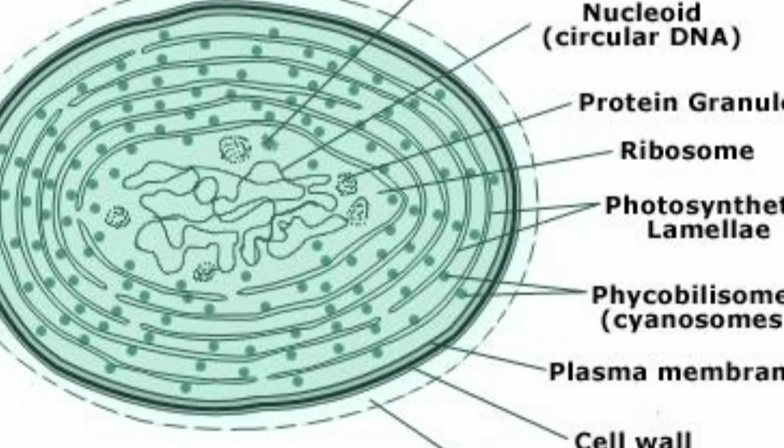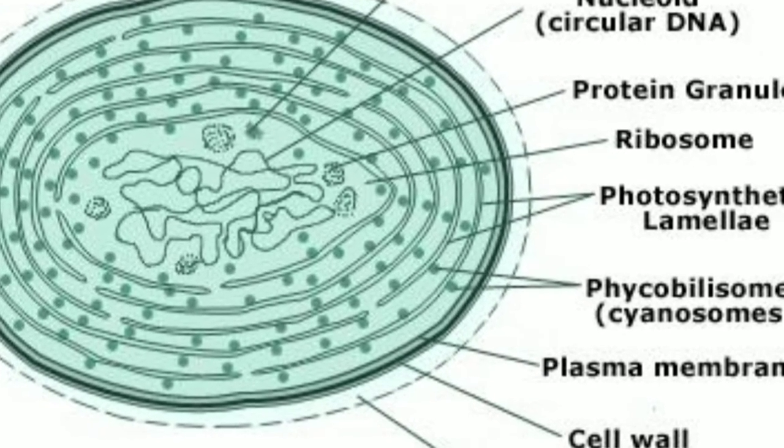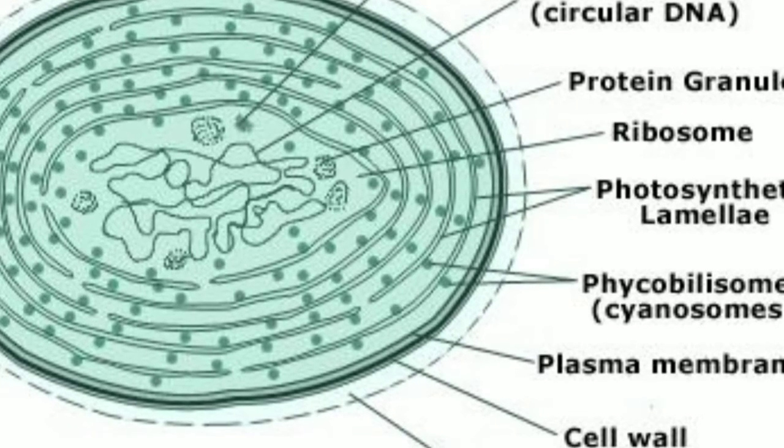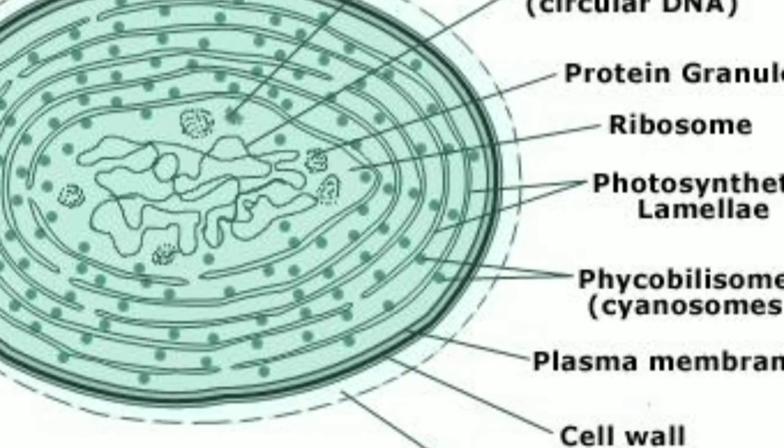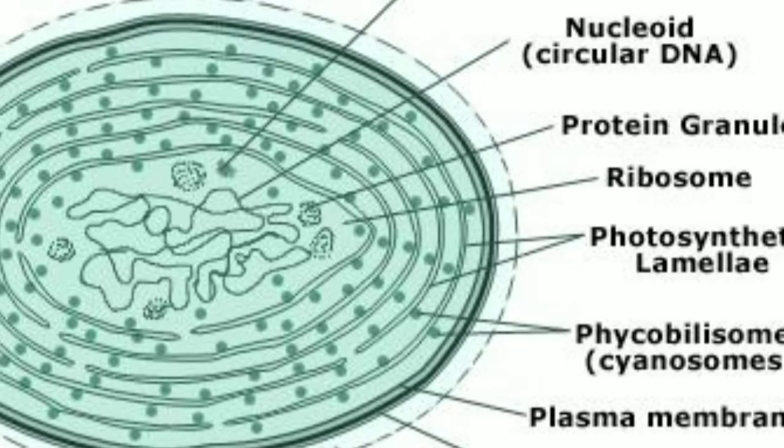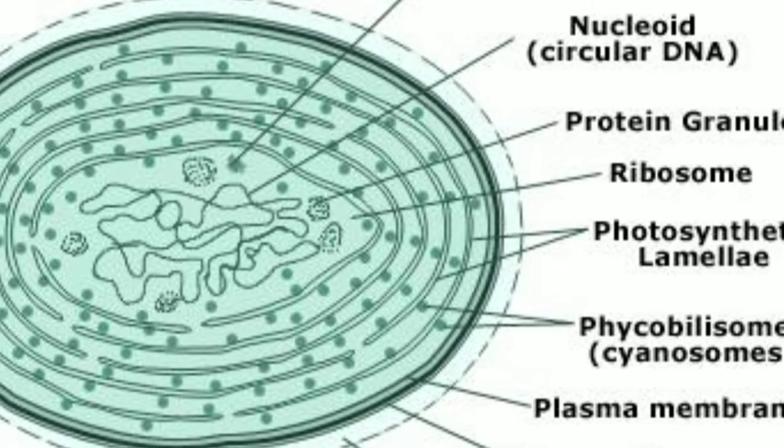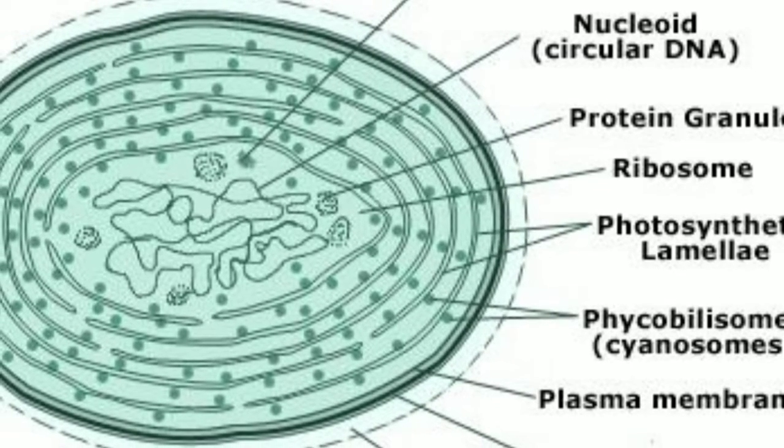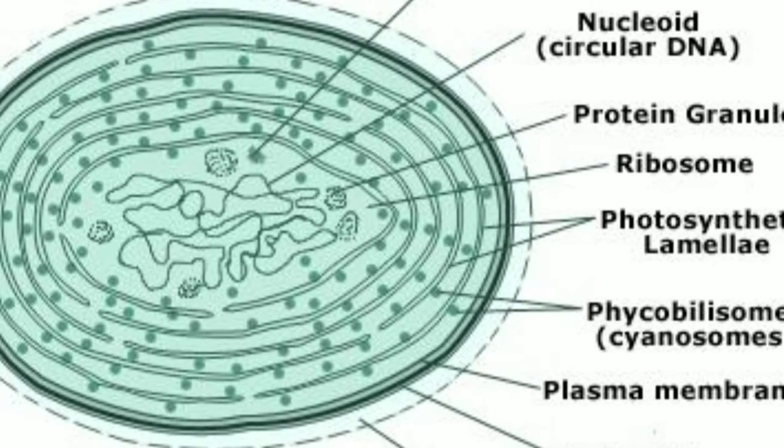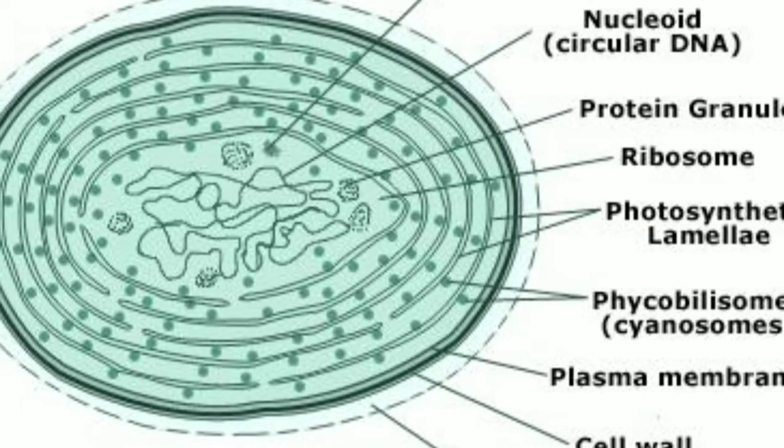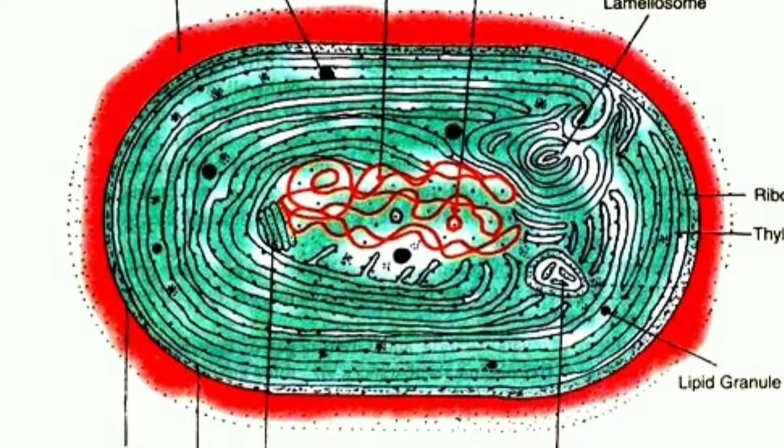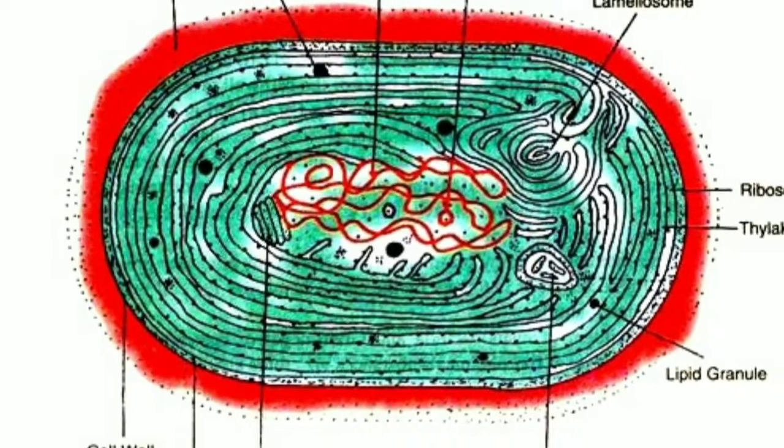Chromatoplasma also contains protein granules, gas and oil vesicles. Cyanophysin granules are also known as structural granules. They are irregular or polyhedral in shape and store protein in the form of polypeptides.